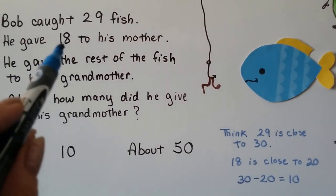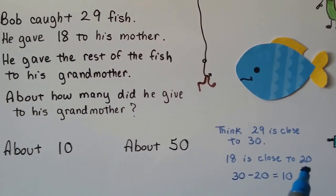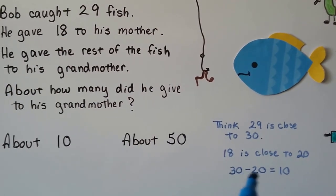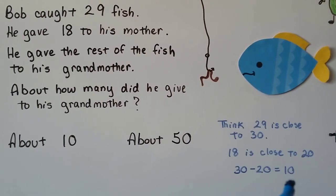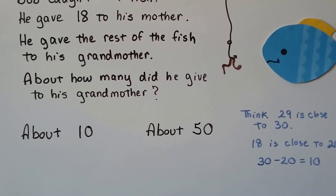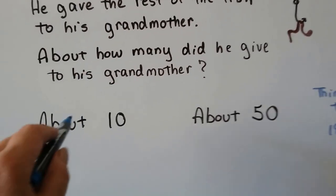And 18 is very close to 20. And we subtract. We can do 30 minus 20. Well, that's 10. And it's not the exact amount. It's an estimate. So we can say he gave about 10 to his grandmother.